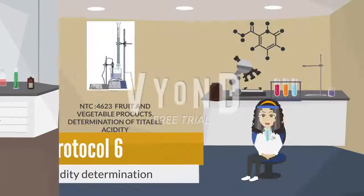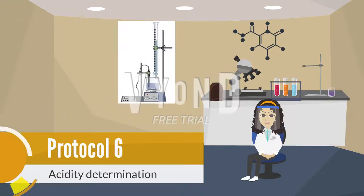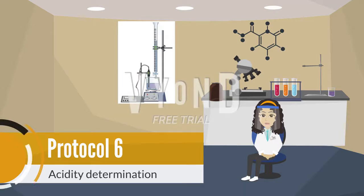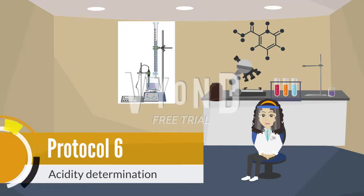Protocol six is acidity. This protocol is important because it seeks to identify the type of acidity of the sample. It also addresses a soft taste, release of hydrogen, and a pH lower than 7, carried out following NTC 4622.